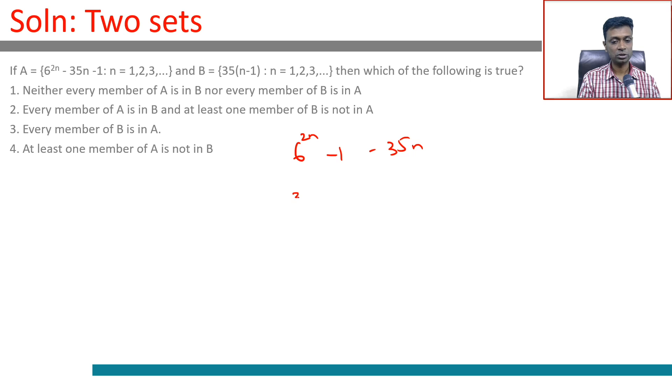I'm going to write it as 6^(2n) - 1 - 35n. This is 36^n - 1^n - 35n. 36^n - 1^n will be a multiple of 36-1, so every element in A is a multiple of 35.